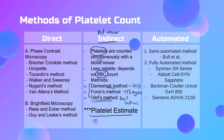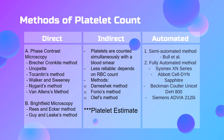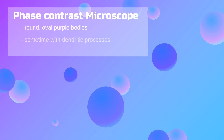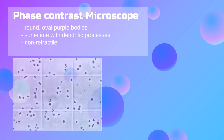The platelet estimate may be considered under the indirect method, but remember a platelet estimate is not a platelet count — it is only an estimate to double-check the platelet count performed by direct, indirect, or automated methods. The automated method may be semi-automated using the Bullet al formula, or fully automated machines like Sysmex, Abbott, Beckman-Coulter, and Siemens Advia.